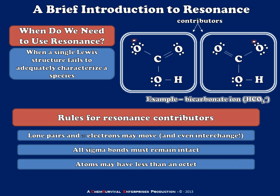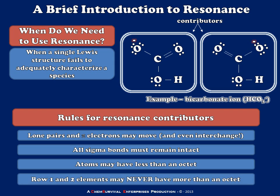When drawing resonance contributors, atoms are allowed to have less than an octet of electrons. But what you can never do for row one and two elements is expand their octet, because they simply don't have the atomic orbitals available to hold that many electrons. So even though we can draw species with only six electrons in the valence shell, we can't draw one with ten valence electrons for row one and two elements. Exceptions exist for things like sulfur, but in organic chemistry we never exceed an octet.